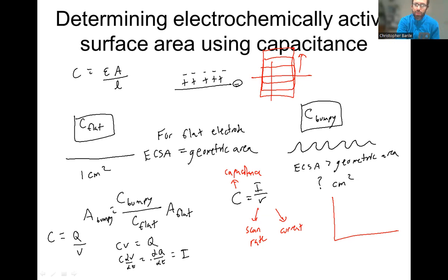So you get this I equals C times dV dt. With dV dt, that's how much you're changing the voltage per time. That's equal to scan rate. So you get this I equals C times nu. Which is just the same as this equation rearranged, dividing by nu, the scan rate, on both sides.